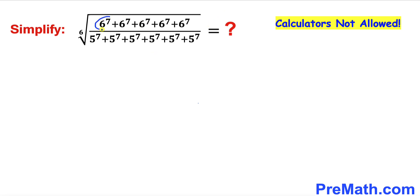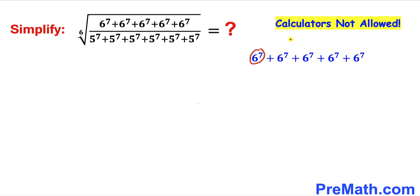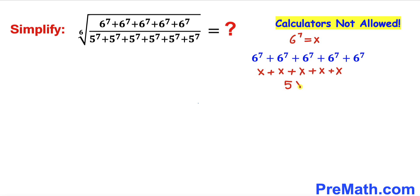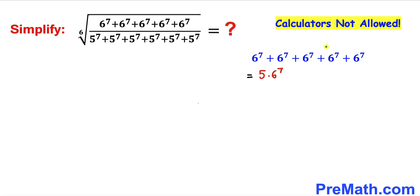Let's focus on the numerator part in this radicand. To make things simple, let me assume that 6^7 equals x. Then this expression is going to become x plus x plus x plus x plus x — five times. So adding these x's gives us 5 times x, and we know x is 6^7. Therefore this becomes 5 times 6^7.